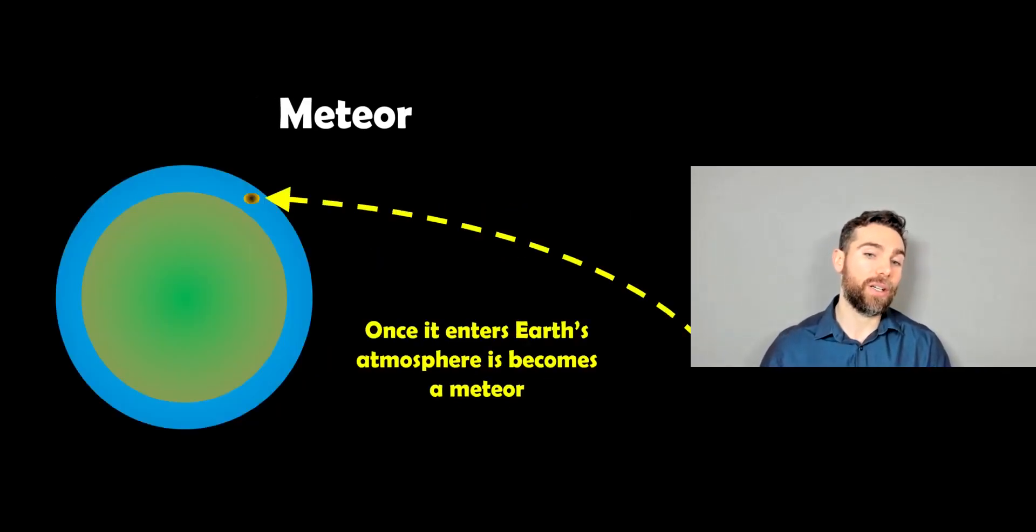Now a meteor is one of those meteoroids that has then entered earth's atmosphere. So if we've ever seen a meteor in the sky, a bright streak, it's as that meteoroid has entered the atmosphere and that's when it's then called a meteor.